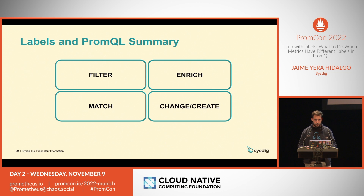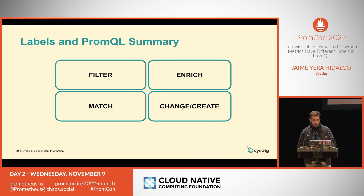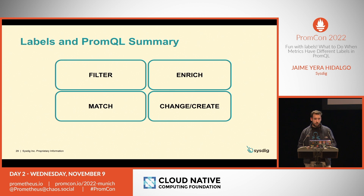So in order to summarize: labels give us the opportunity to filter our metrics — maybe we only want to pick information for a certain pod type or namespace. Without labels, we cannot match operations. As we saw in the first example, we had to match them. We can also enrich metrics with information and details from other metrics provided by other exporters. And we can change and create new labels with the label_replace syntax. We can combine all this information in our PromQL use cases, but when we begin with PromQL we have to make baby steps and start from the basics.